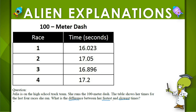Think about it — if you were going to be the fastest, are you going to have a large number or a smaller number of seconds? Well, the faster person gets there the quickest, and the quickest person would have the smallest number of seconds. So what we're really looking for with 'fastest' is the least value, and the slowest time would be the greatest.